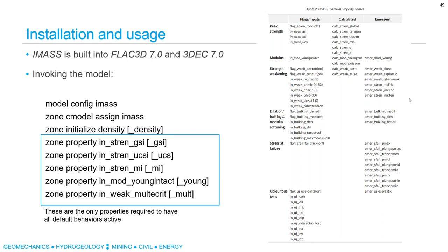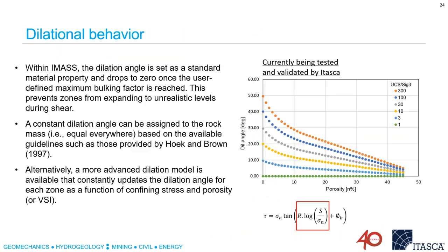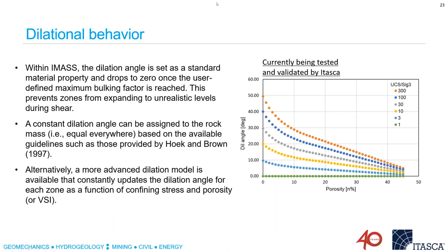Does the dilation angle model only apply from post-peak to residual based on porosity, and is dilation from peak to post-peak assumed negligible with zero degrees? No. The dilation angle is a function of VSI, and the change in VSI between peak strength and post-peak strength is very minimal. Between peak and post-peak, it's going to be near the maximum value of dilation angle — somewhere in this range near zero percent porosity — so it's not zero.